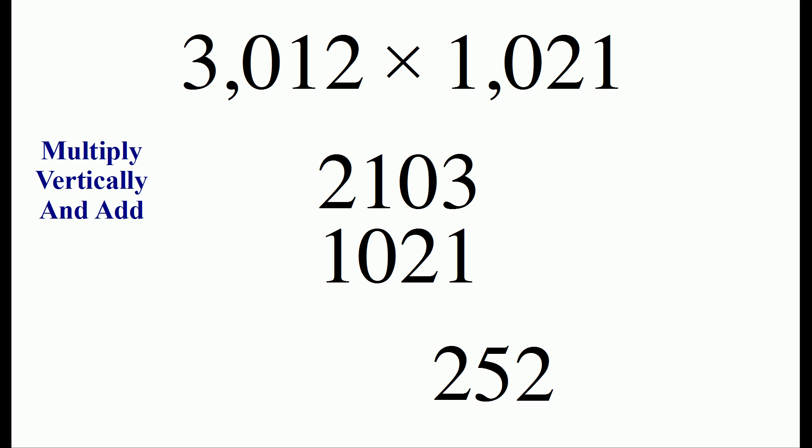We continue to slide so we have 2 times 1 is 2, 1 times 0 is 0, 0 times 2 is also 0, and 3 times 1 is 3. So we add 2 and 3 to get 5.